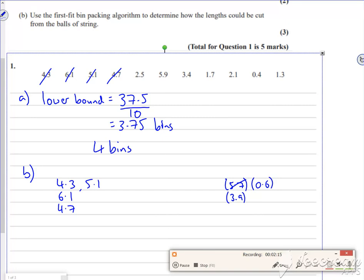The 4.7 goes there, so I've got 5.3 left. The 2.5 won't go in the first bin, but will go in the second bin. So I've got 2.5 in here, knocking this down to 1.4. 5.9 won't go in the first bin, won't go in the second bin, won't go in the third bin. So it gets its own bin, number 4. The 5.9 is there and there is 4.1 left over.